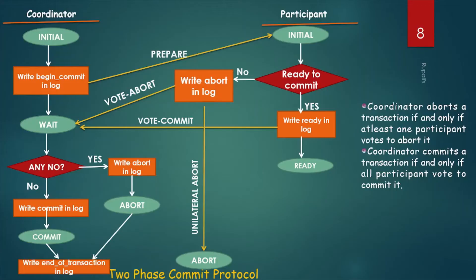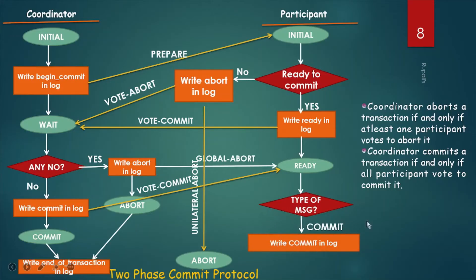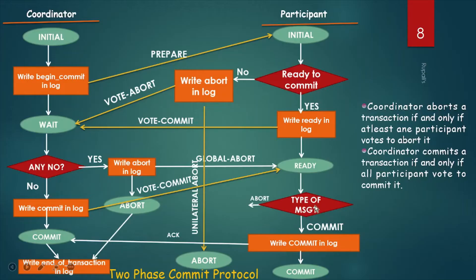The participant site can receive one of two types of messages: either a global abort message or a vote-commit message from the coordinator site. The participant site checks the type of message. If it is commit, it writes commit in its own log, sends an acknowledgement to the coordinator, and goes to the commit state. If the message is a global abort, the participant site writes abort in its own log and sends an acknowledgement to the coordinator.